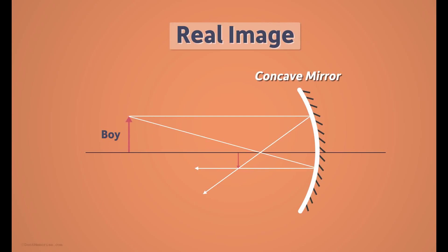You see that in this case, the image is formed on the same side of the mirror as the object is. Real images are always formed on the same side as that of the object. And light rays do reach this position.